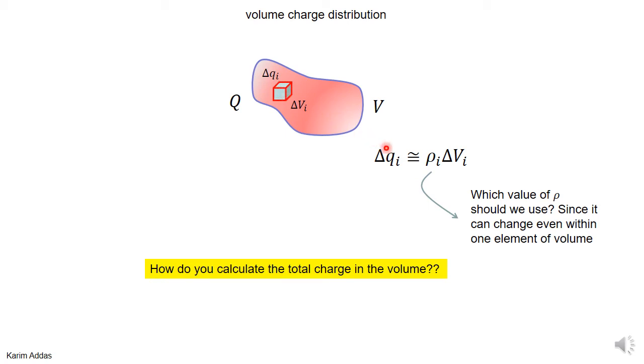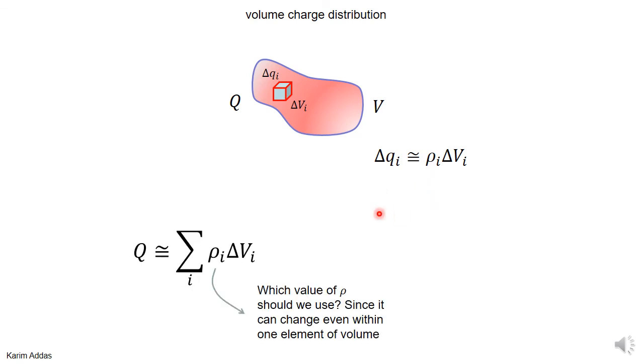But that would still be an approximation. We could say that the total charge inside the volume is approximately the sum of ρ times ΔV. You take ρ at the center of each element, multiply by the volume—that gives the charge in one element. Then you go to the next element, get ρ at the center, multiply by that volume, and so on. If you do that, you'll get an approximate value for the total charge.